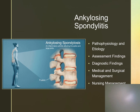Ankylosing spondylitis is a chronic connective tissue disorder of the spine and cartilaginous joints that progresses to progressive immobility and possible fusion of the vertebrae. The cause is unknown, but there may be a familial tendency. These clients will experience low back pain, a flattened lumbar curve, aortic regurgitation, a permanently flexed neck, reduced lung sounds, fatigue, anorexia, and weight loss.